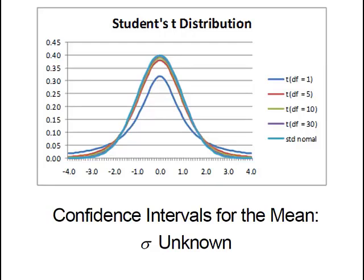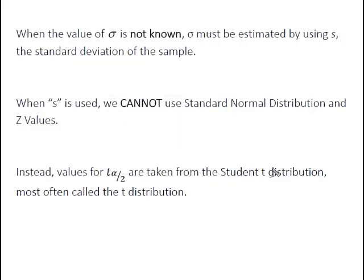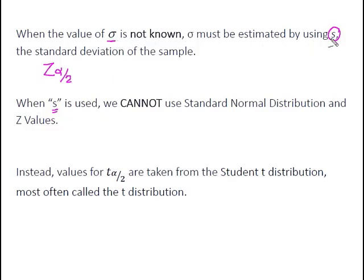Hey everybody, it's Professor Williams. I want to talk about confidence intervals for the mean when we don't have the population standard deviation. There are many instances when sigma is just not known. When the value of sigma is not known, we're going to estimate it using S, the sample standard deviation. When we knew the population standard deviation, we were able to find standard values of z alpha divided by 2 associated with various confidence levels. However, when S is used to estimate population standard deviation, we cannot use the standard normal distribution and z values.